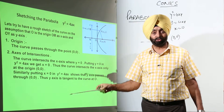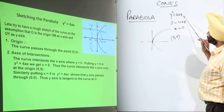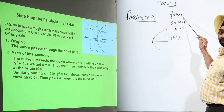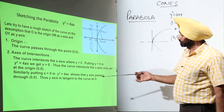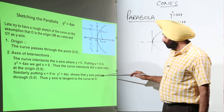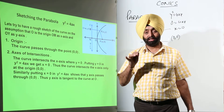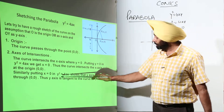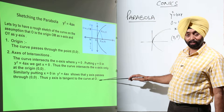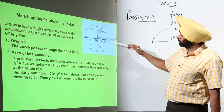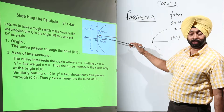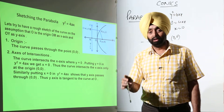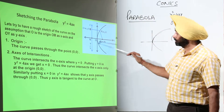Similarly, putting x equals 0: 4a times 0 equals 0, so y squared equals 0, meaning y equals 0. This again shows both axes pass through the origin. Thus the y-axis is the tangent to the curve at point (0, 0) — it touches the parabola at only one point, that is (0, 0).